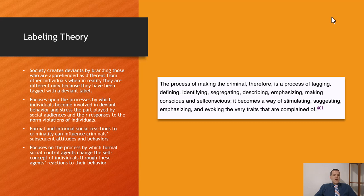These are the questions we should be asking. Labeling theory focuses on the processes by which formal social control agents change the self-concept of individuals through their reactions to behavior. It's that looking-glass self — how you think other people feel about you influences how you feel about yourself. And if you get socially labeled, what happens when you call a kid a nerd in school?